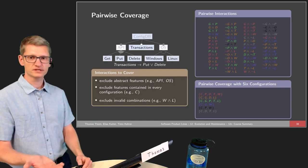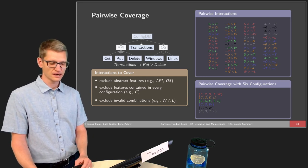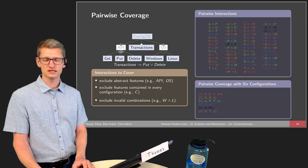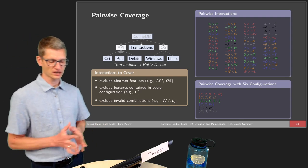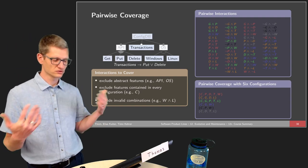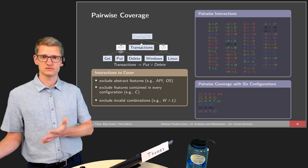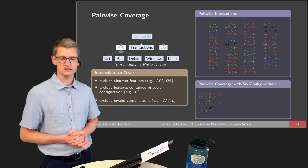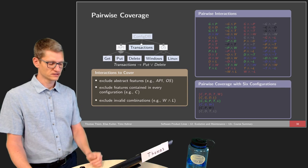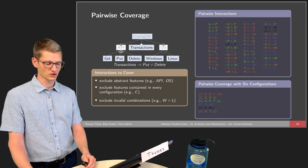Not everything can be detected by static analysis, so we also looked at dynamic analysis and testing. The most researched technique, also becoming more popular in practice, is pairwise coverage — pairwise interaction testing, where we try to cover every pair of features to ensure some coverage of the configuration space. This is grounded in the knowledge that higher-order interactions are much more seldom than pairwise or one-wise interactions, and we can find those by examining only a small subset of the configuration space — in one example, only six configurations.